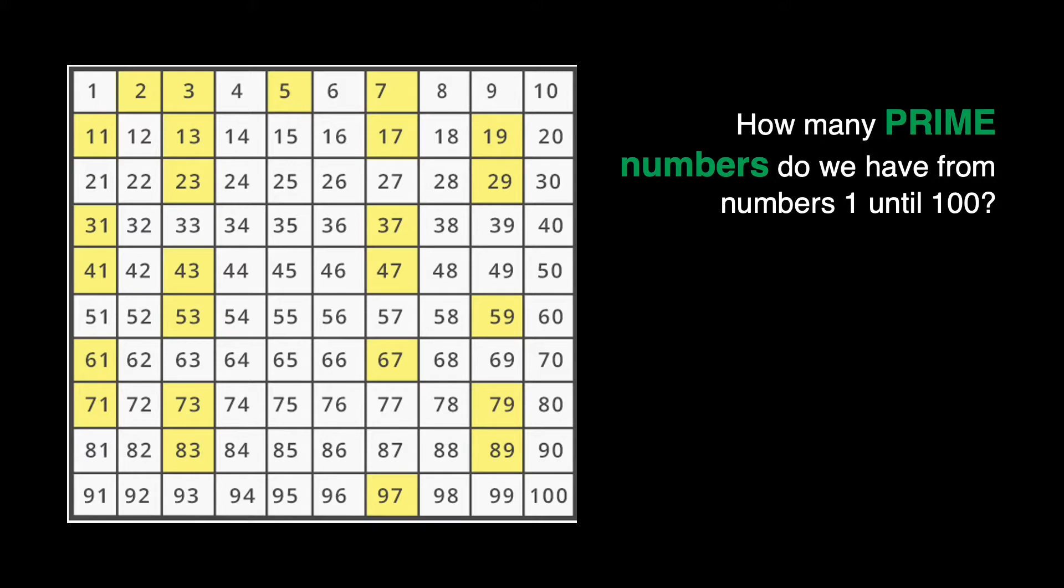Okay, I'll give you like 10 seconds to count all the shaded yellow boxes. Okay, you got it right. We have 25 prime numbers from 1 to 100 and the smallest prime number is 2. Well, the biggest 2-digit prime number is 97.